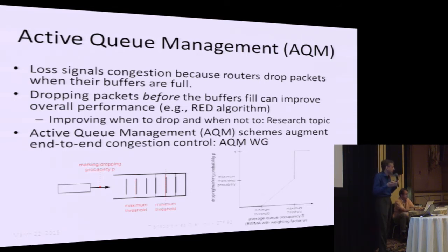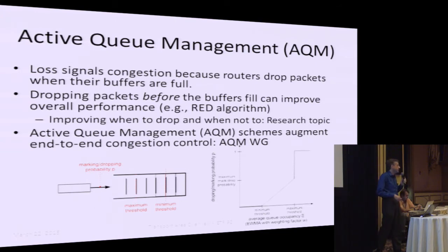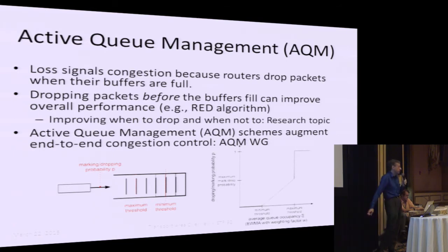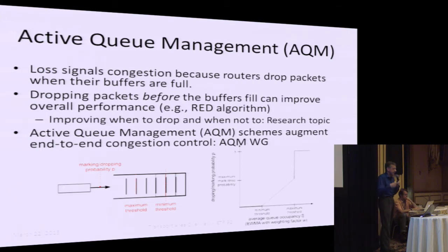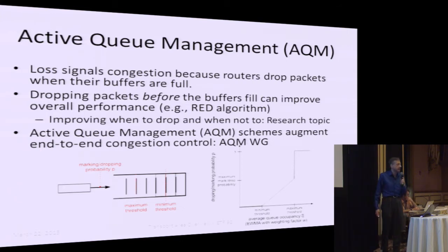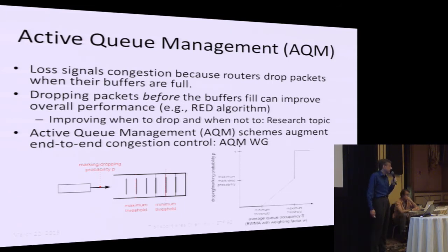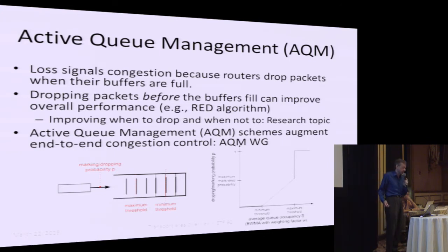The AQM working group is working on schemes to control the size of the standing queue. Left to itself with a very large queue, if TCP is transmitting faster than the bottleneck link can receive, it will fill every queue in front of that bottleneck and your latency will be terrible. Algorithms like CoDel, FQ CoDel — which is now preferred — and PI are two of them. If you're interested in this, please look at that working group.